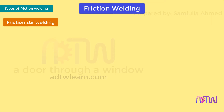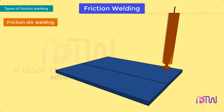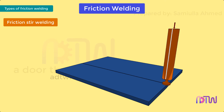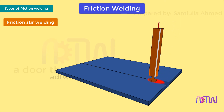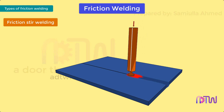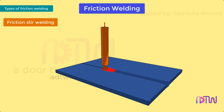Friction stir welding: a non-consumable tool, similar to a drill bit but with no cutting edges, is rotated at a high speed in a spindle and brought into contact at the interface of the two workpieces to be joined. This causes the metal to heat up and become viscous, and the metals diffuse into one another. The tool is then moved linearly, producing a continuous weld throughout, similar to an arc welding process.